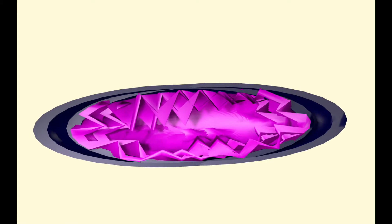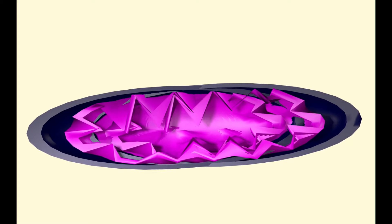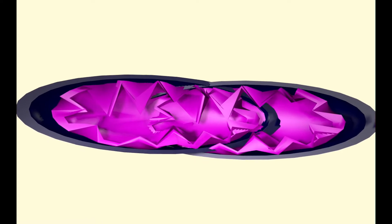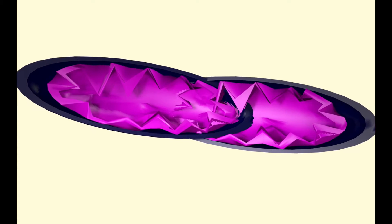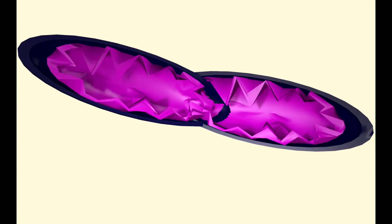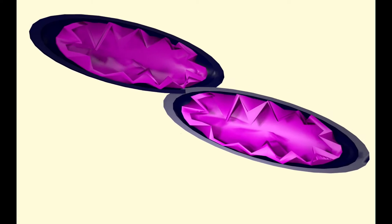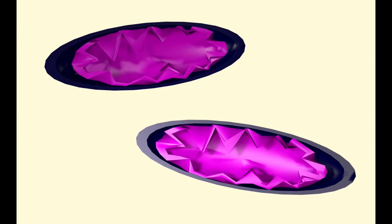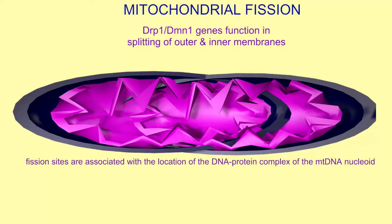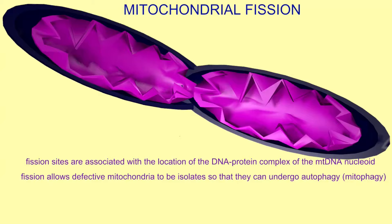Mitochondria can undergo fission. The fission sites are associated with the region where the DNA is wrapped with proteins to form a nucleoid, and fission allows defective mitochondria to be isolated so that they can undergo autophagy or mitophagy.